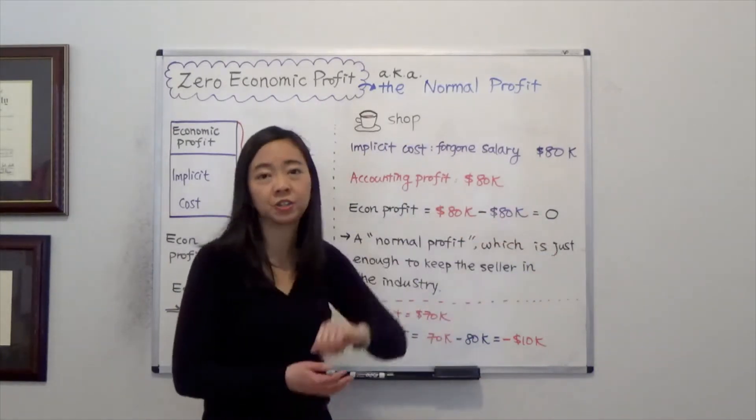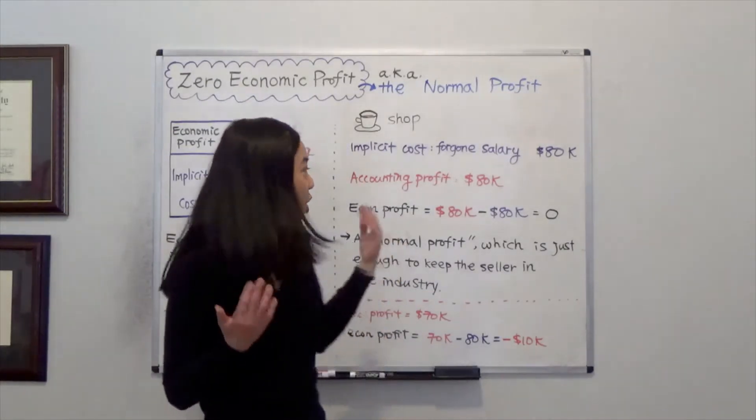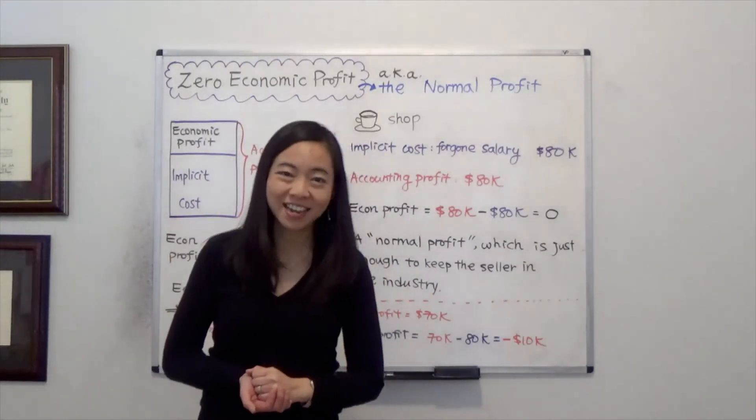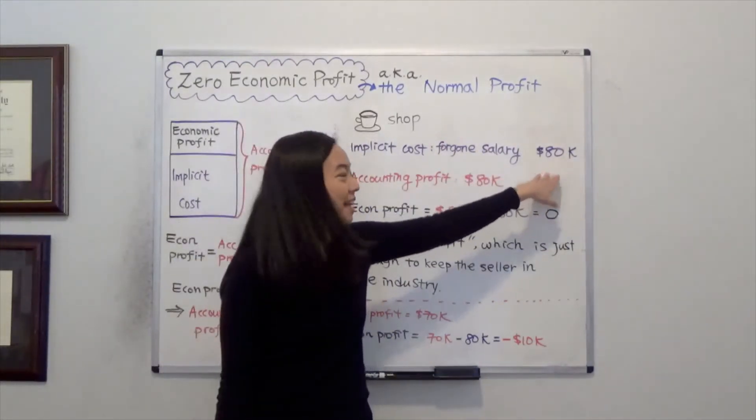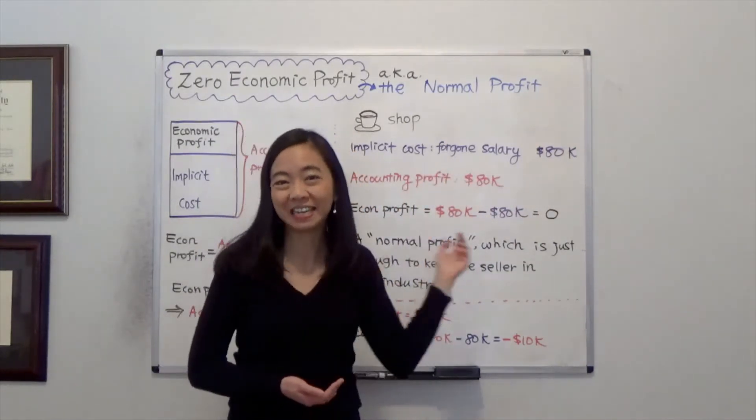Now this situation doesn't mean that you are miserable. It just means you're equally happy with the coffee shop which gives you an accounting profit of eighty thousand dollars, or being an engineer that earns a salary of eighty thousand dollars. You're equally happy with either scenario.